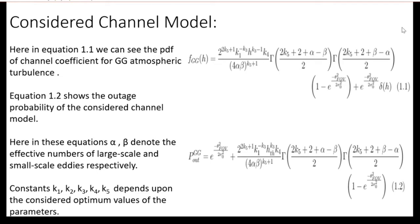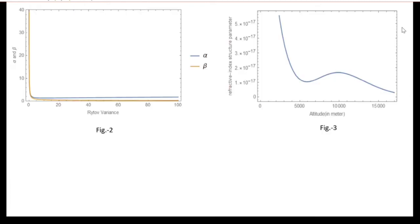The channel coefficient accounts for large-scale and small-scale fading respectively. Alpha and beta depend on Rytov variance, and the dependency of alpha-beta on Rytov variance is shown in Figure 2. Rytov variance depends on the refractive index structure parameter, and the dependency of the refractive index structure parameter on altitude is shown in Figure 3.